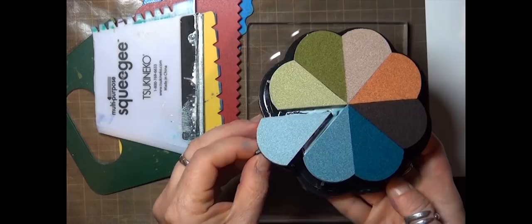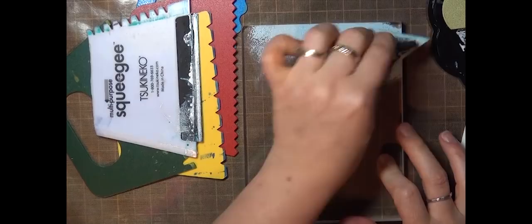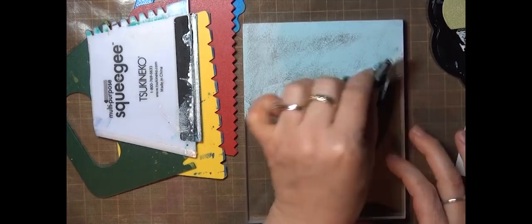I'm going to do a layered print, so I'll start by just inking up the entire block in the lightest blue that I have here. When you do layered prints, it works best to work from light to dark, so the lighter colors show through where we add texture or take away ink.